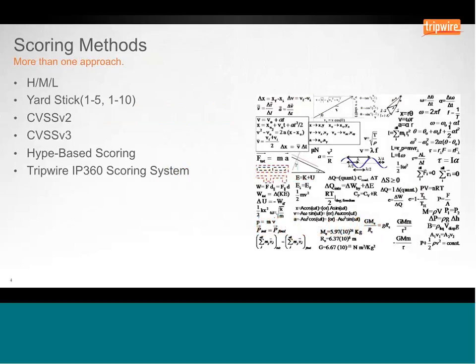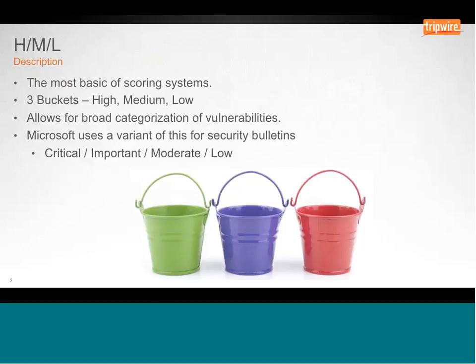So how we'll talk about this is by looking at a number of scoring methods that are out there. There's definitely more than one approach — there's not necessarily a one-size-fits-all approach to scoring. It might be that you use multiple scoring methods combined in order to speak to different teams within your company or to address different types of issues. It's important to understand what's available, how they work, and the advantages and disadvantages each presents. We'll start with HML — High, Medium, Low scoring — the most basic of scoring systems.